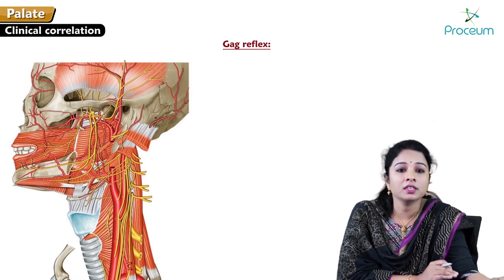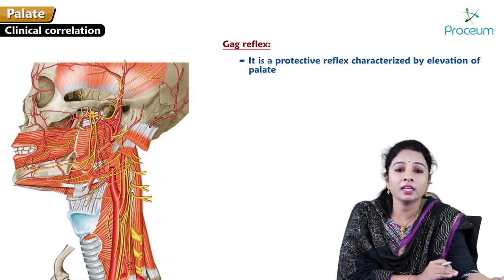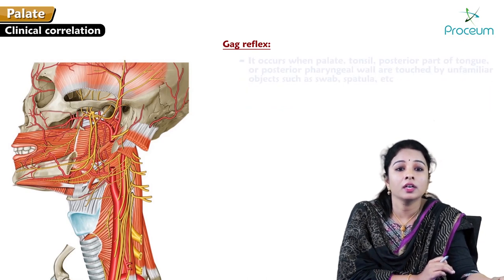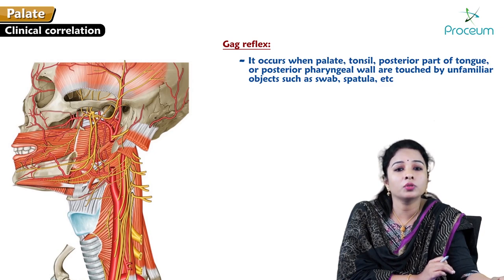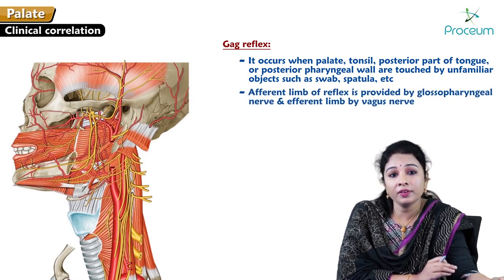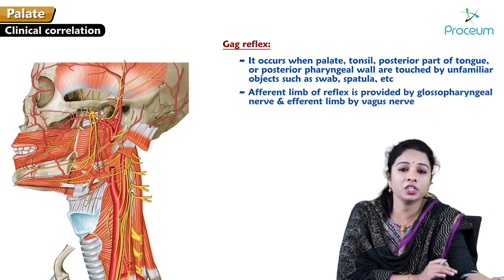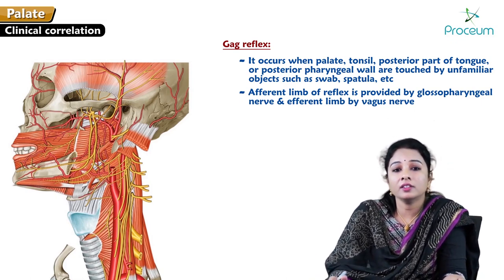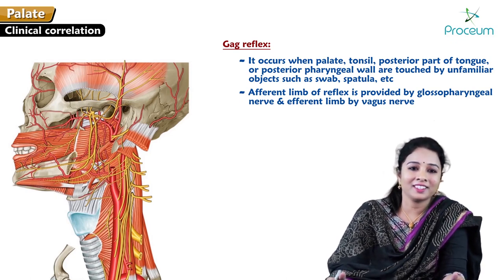The gag reflex is a protective reflex characterized by elevation of the soft palate and contraction of pharyngeal muscles with associated retching and gagging, in response to stimulation of the mucous membrane of the oropharynx. It occurs when the palate, tonsil, posterior part of the tongue, or posterior pharyngeal wall are touched by unfamiliar objects such as a swab or spatula. The afferent limb is provided by the glossopharyngeal nerve and the efferent limb by the vagus nerve. This completes the anatomy of the hard palate and soft palate.